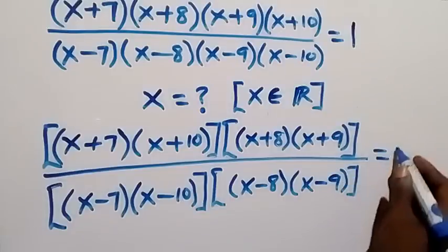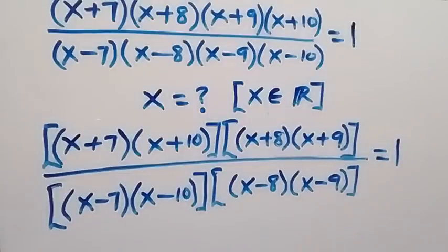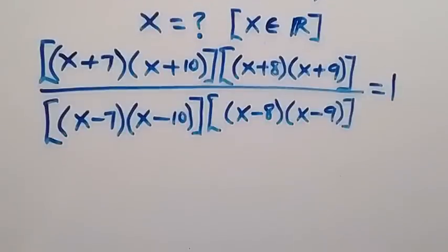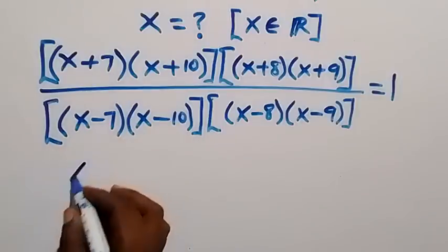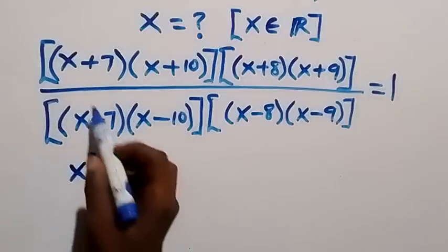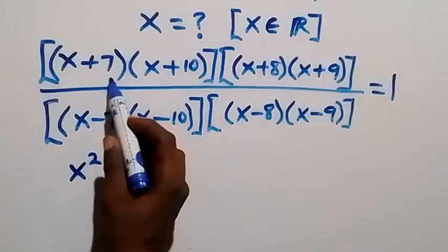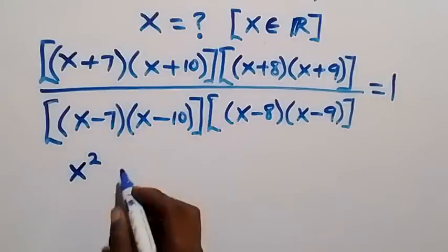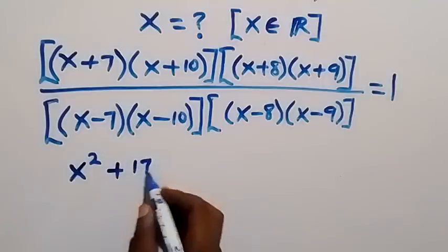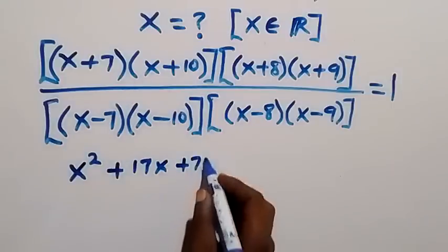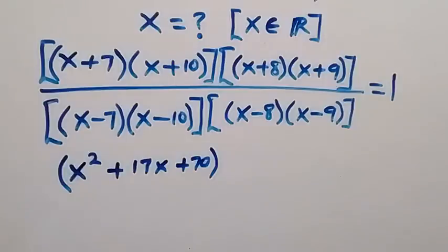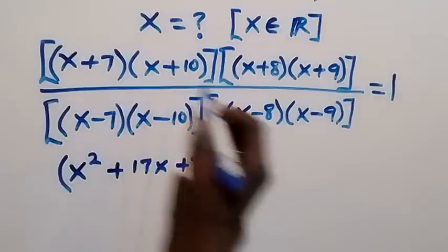We also group x minus 8 multiplied by x minus 9, and then this equals 1. In the next step let's expand the brackets. When we expand, we have x times x giving x squared, then x times 10 giving 10x, then 7 times x adding together to give 17x.